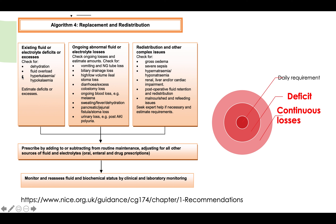Now, speaking about the deficit and continuous losses: you need to assess whether the patient has dehydration, a fluid deficit, third-space loss, sepsis, or anything similar — and obviously consider resuscitation first. The NICE guidance has a lot of detail on this. By deficit and continuous losses, I mean situations like vomiting, an NG tube with large losses due to intestinal obstruction, drains with high output, diarrhea, or high stoma output.